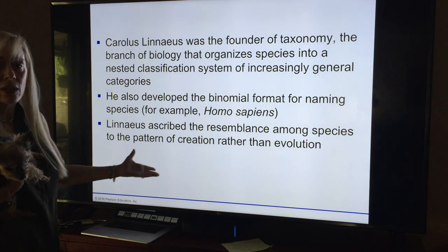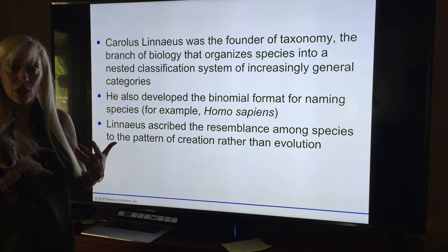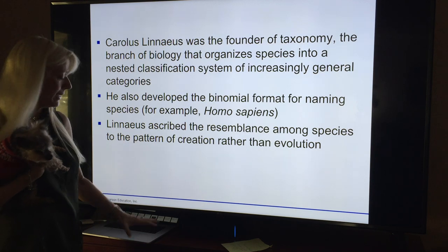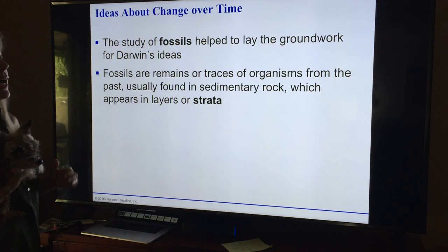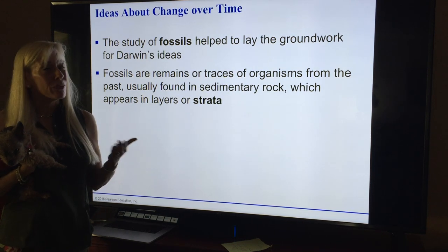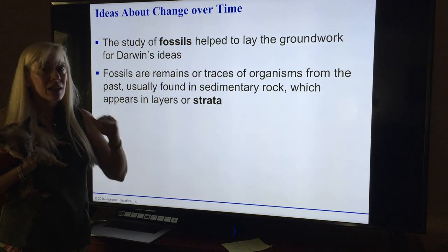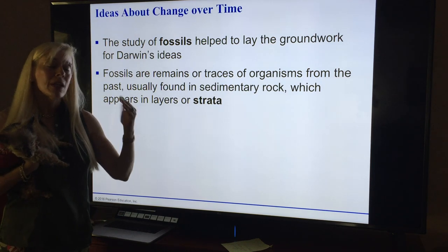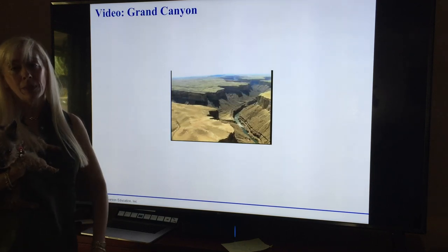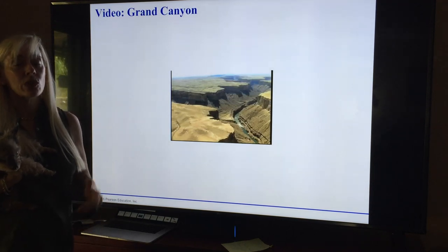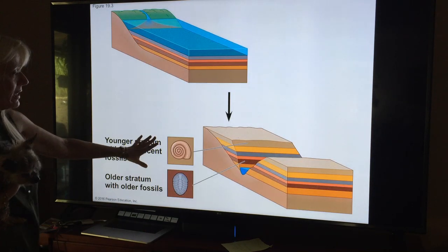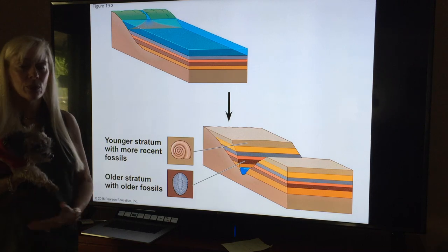Linnaeus went into describing how organisms looked like each other, which is really just morphology — one of the many things we take into consideration. So how do we start studying evolution? We're going to talk about sedimentary rock where you can look at fossils. A fossil is found in strata, or layers. Look at the Grand Canyon — you can see the different layers.